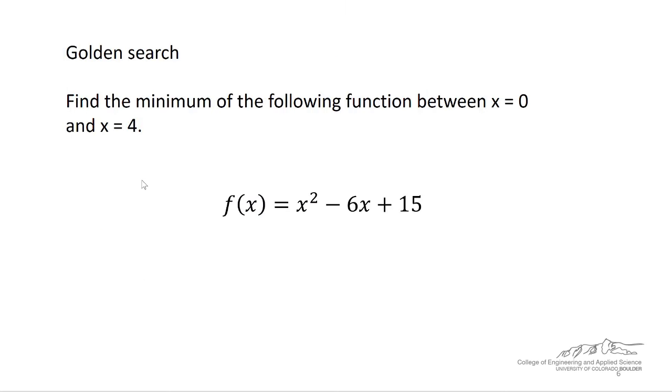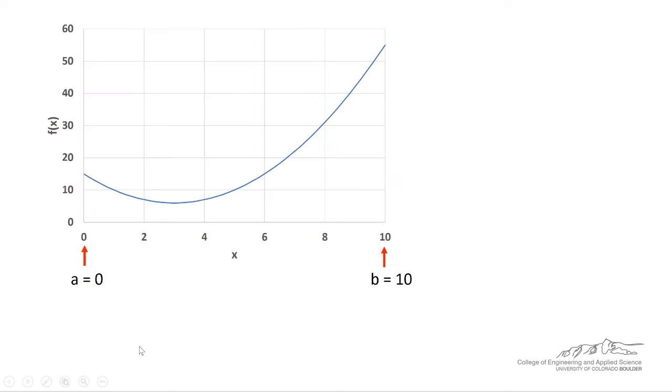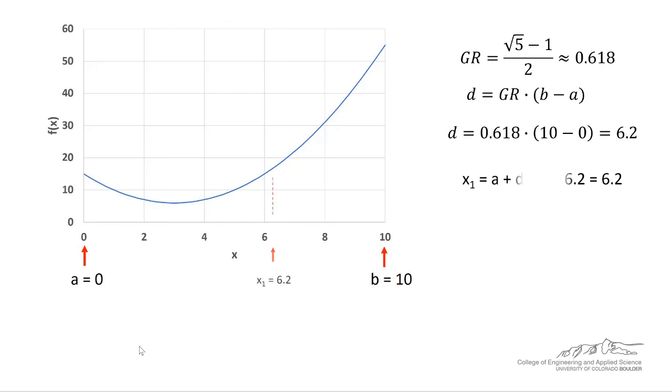So let's go through an example here. We want to find the minimum of the following function between x equals zero and x equals ten. So I've got a is zero, b is ten. That's our lower and upper bounds. Next, we calculate the golden ratio, which is about 0.618. We calculate d, which is 0.618 times the interval b minus a. So in this case, that's 6.2.